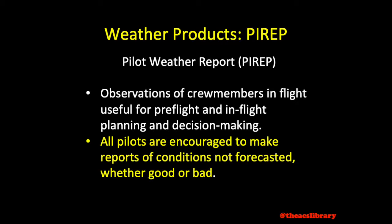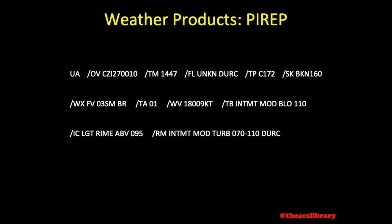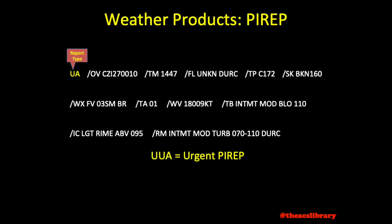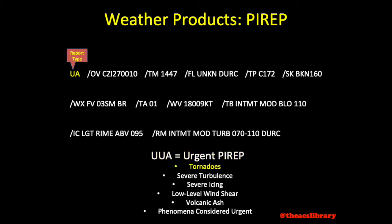PIREPs follow a similar format to the example shown below. Required elements for all PIREPs include the message type, coded UA for routine PIREPs, or UUA for an urgent PIREP. Urgent PIREPs contain information about tornadoes, severe turbulence and icing, low-level wind shear, volcanic ash, or any other weather phenomena considered urgent to pilots.